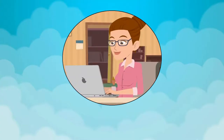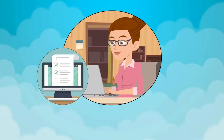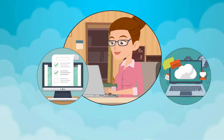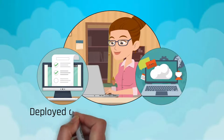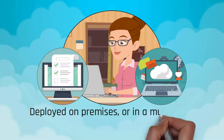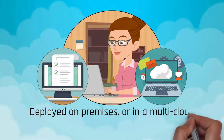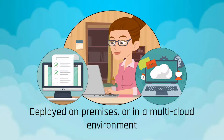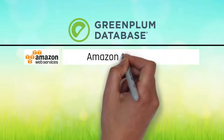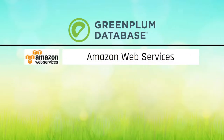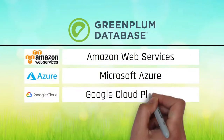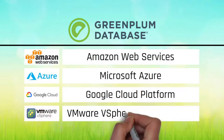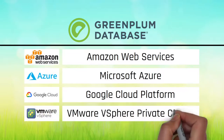Greenplum is able to run anywhere. This infrastructure-agnostic approach enables the same Greenplum software to be deployed on-premises or in a multi-cloud environment. Greenplum is now available in the leading cloud platforms: Amazon Web Services, Microsoft Azure, Google Cloud Platform, and VMware vSphere private clouds.